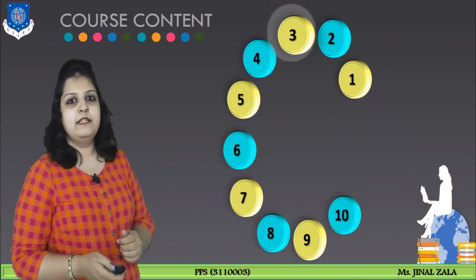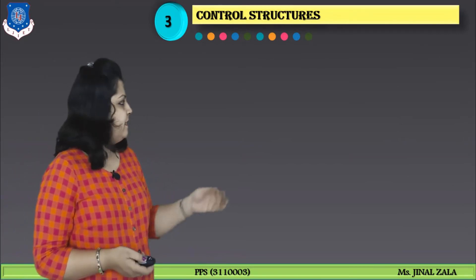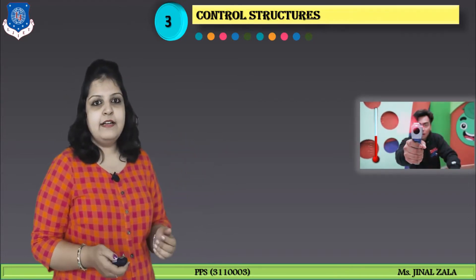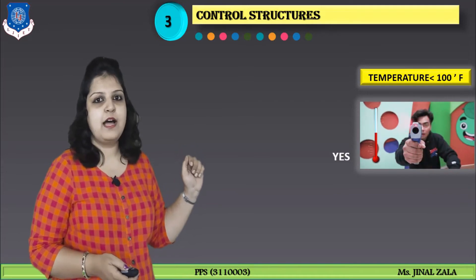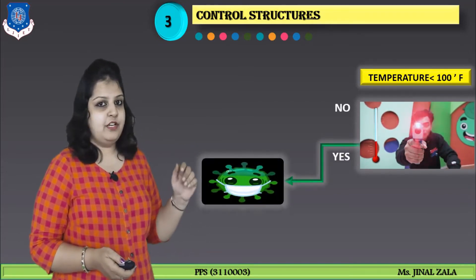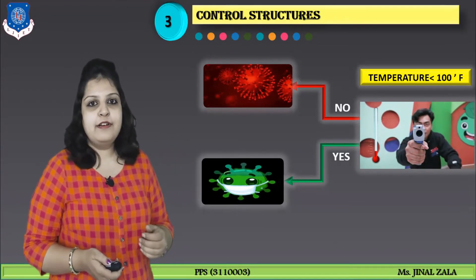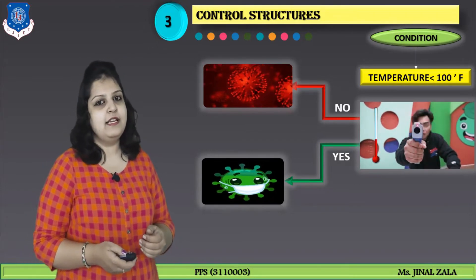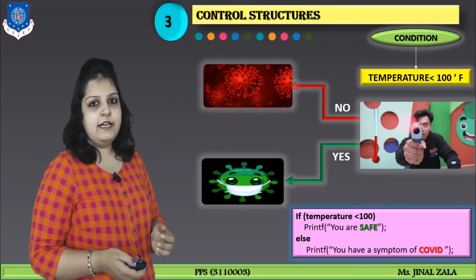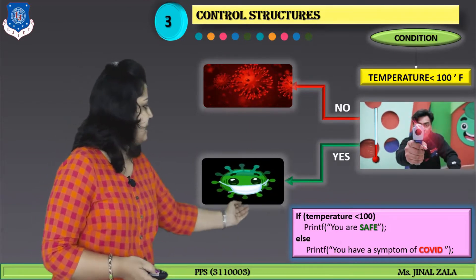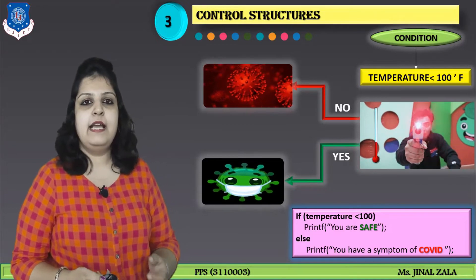Our upcoming module, module number 3, is control structure. Let's understand with a very easy example. Just see this image — it is a temperature testing machine, and nowadays temperature testing is compulsory everywhere. If your temperature is less than 100 degrees Fahrenheit, then you are safe. If your temperature is not less than 100 degrees Fahrenheit, then you have a symptom of COVID. This is a condition, and if you want to write any type of conditional statement, we can write it using an if statement. The condition will be either true or false — 'you are safe' is the true part, and 'you have a symptom of COVID' is the false part.